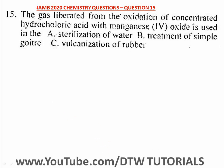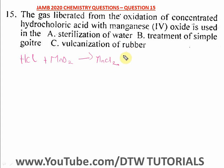Question 15, John 2020: the gas liberated from the oxidation of concentrated hydrochloric acid with manganese dioxide. Let's write out the reaction: concentrated hydrochloric acid plus manganese dioxide gives manganese chloride plus two moles of water, balancing the reaction, plus Cl₂.